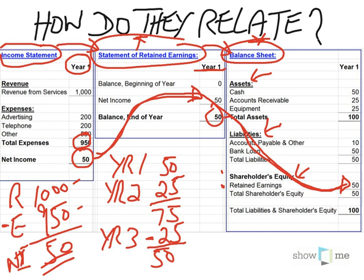To define what a balance sheet is: you look at all the assets of the business. Assets are anything the business owns — that could be cash, amounts on account that customers owe them, or physical items like tables, chairs, and equipment.